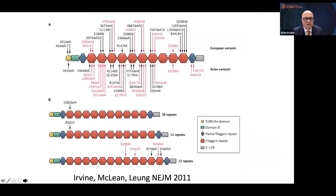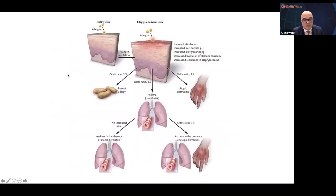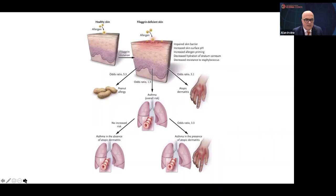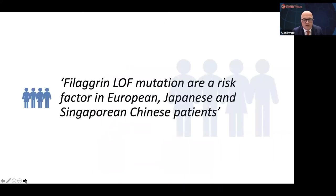The genomics of filaggrin are well worked out. In Europeans there are some recurrent variants and lots of private variants individual to families. The same is true in Asia. We also have 10, 11, or 12 repeat alleles. Having a complete loss-of-function filaggrin mutation on one allele causes a great propensity to atopic disease — for example, the odds ratio for peanut allergy is about five times, about 50% more likely to have asthma, and three to five times more likely to have atopic derm.